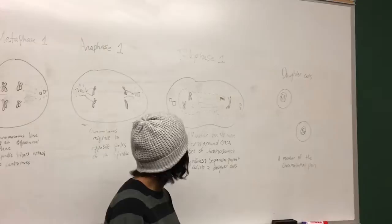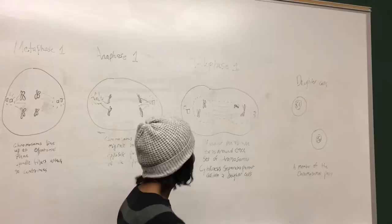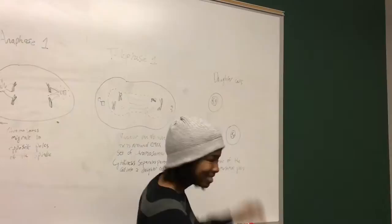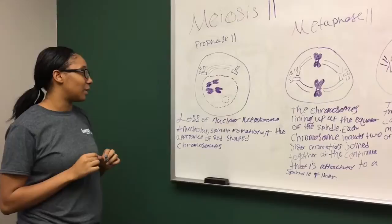And then we have telophase one, where the nuclear membrane forms around each set of chromosomes, and cytokinesis separates parent cell into two daughter cells. And here everybody starts to know you don't have the same personality. And then we have the two daughter cells, where this is a nice personality, and that one's just not, that one's just messed up.